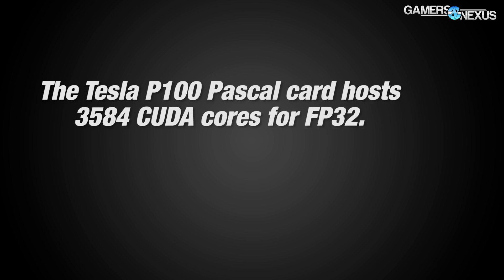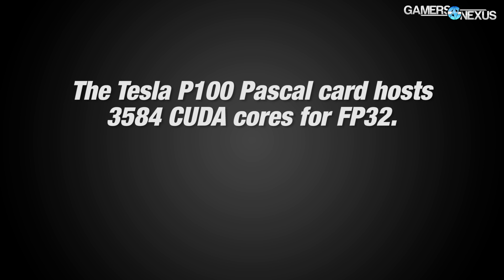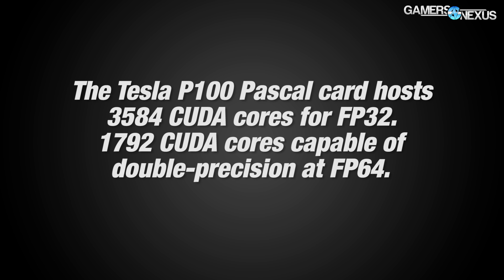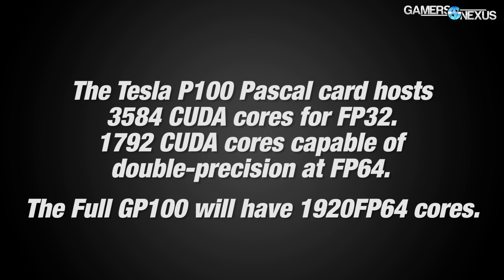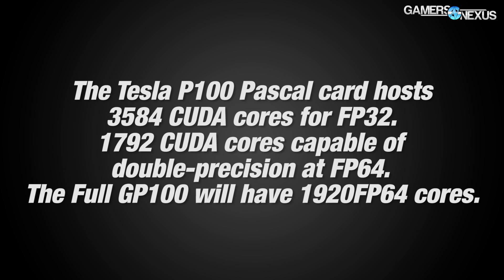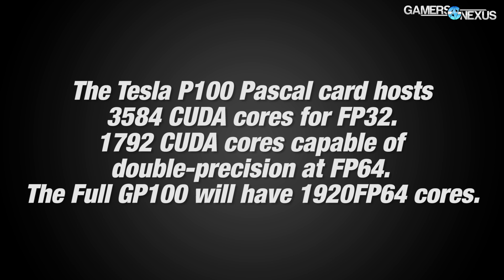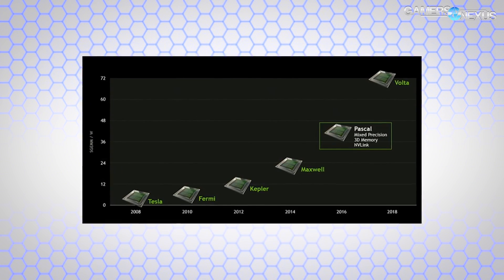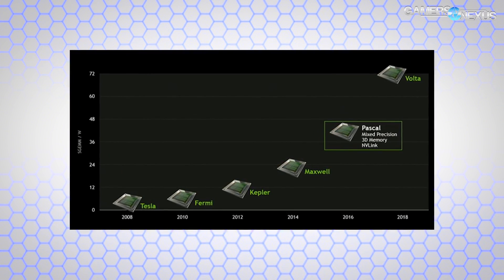The Tesla P100 Pascal card hosts 3584 CUDA cores for FP32 and 1792 CUDA cores capable of double precision at FP64. The full GP100 will have 1920 FP64 cores if it's released. Pascal's P100 base clock rate is 1328 MHz and boosts to 1480 MHz — pretty fast for a GPU.